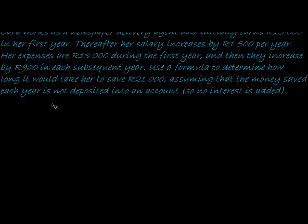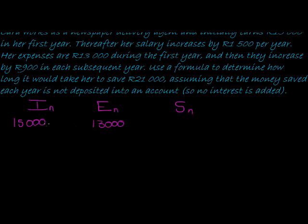So let's take her income as a series or as a sequence actually. Let's call her income IN, her expenses EN, and then her savings, her total savings is SN. The first year she's earning R15,000 and her expenses is R13,000. So how much has she saved? Well, if I deduct these two from each other, I get 15,000 minus 13,000 is 2,000. So that's the sum of the first one.